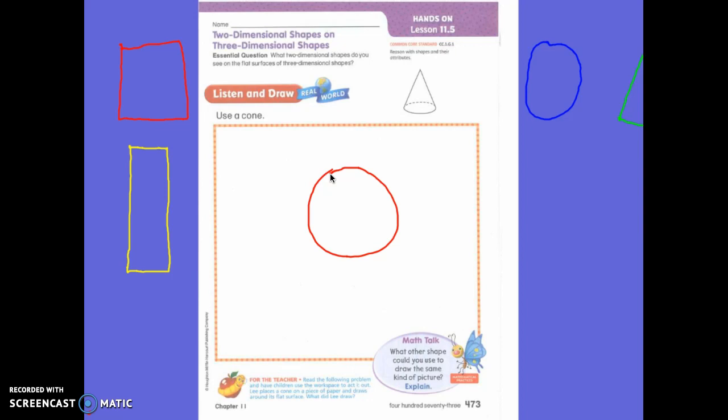What other kind of surface does a cone have? It has a flat surface. But what is the other surface called? A curved surface. You are exactly right.